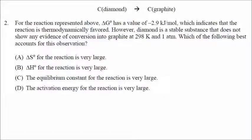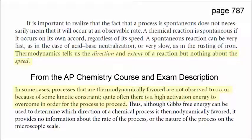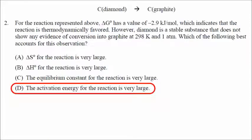In number two, we have a reaction that is favored because delta G is negative, but it does not occur — there's no evidence of conversion from diamond into graphite at 298 Kelvin and one atmosphere. Thermodynamics tells us the direction and extent of a reaction, but nothing about the speed. Processes that are thermodynamically favored but not observed often have a kinetic constraint — quite often a high activation energy. So the correct answer to number two is D.